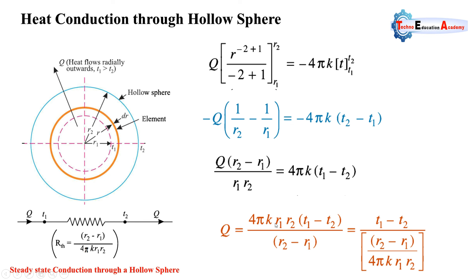We can also write this equation as Q = (T1 − T2) / R_thermal, where the thermal resistance for a hollow sphere is R_thermal = (r2 − r1) / (4πk·r1·r2). This is the thermal resistance of conduction for a hollow sphere.